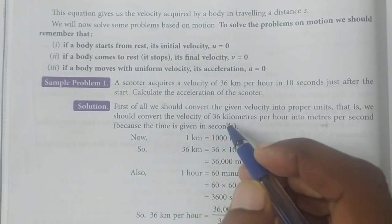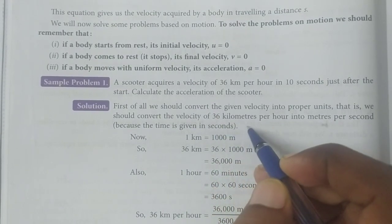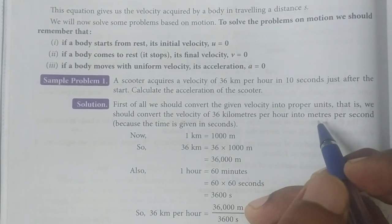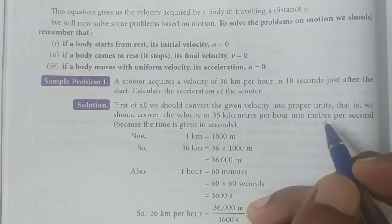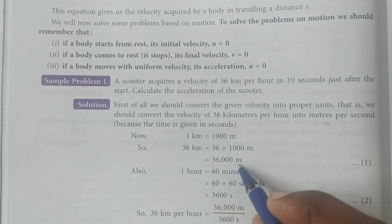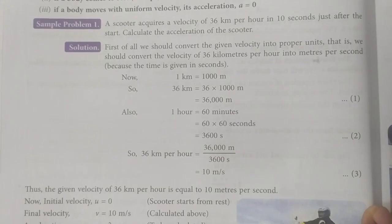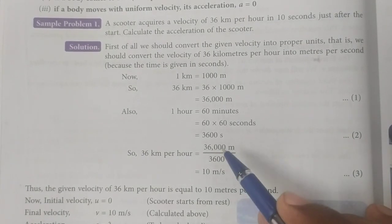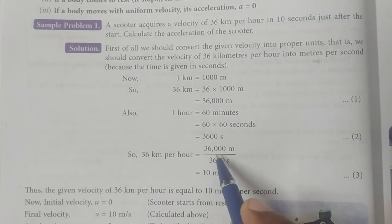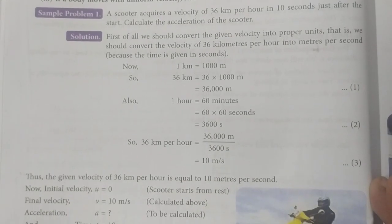First of all, we should convert the given velocity into proper units — that is, convert 36 km per hour into meters per second. Since 1 km equals 1000 m, therefore 36 km equals 36,000 m, and 1 hour equals 3600 seconds. So 36 km per hour equals 36,000 m divided by 3600 seconds, which equals 10 m per second.